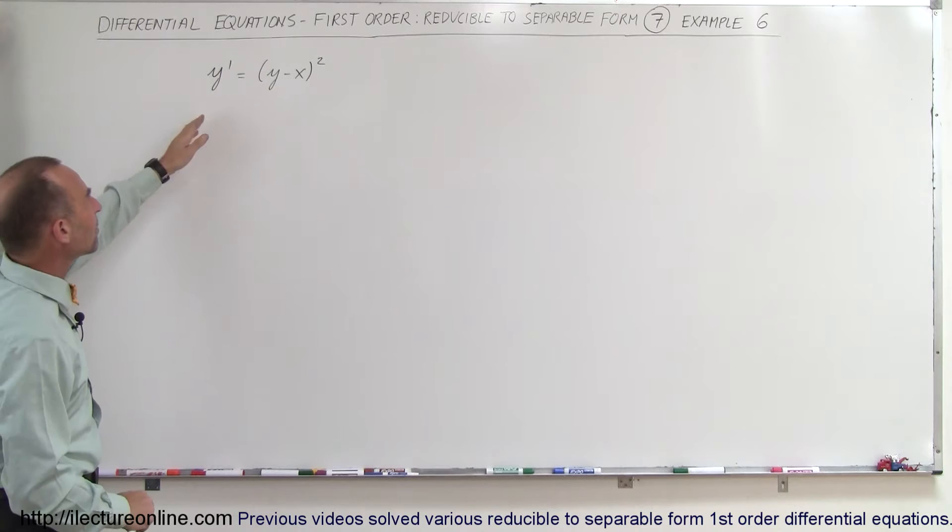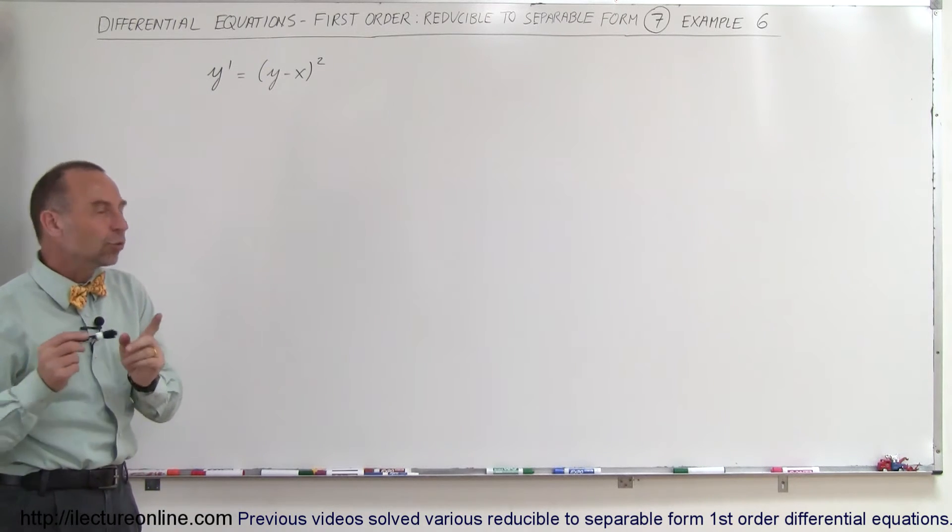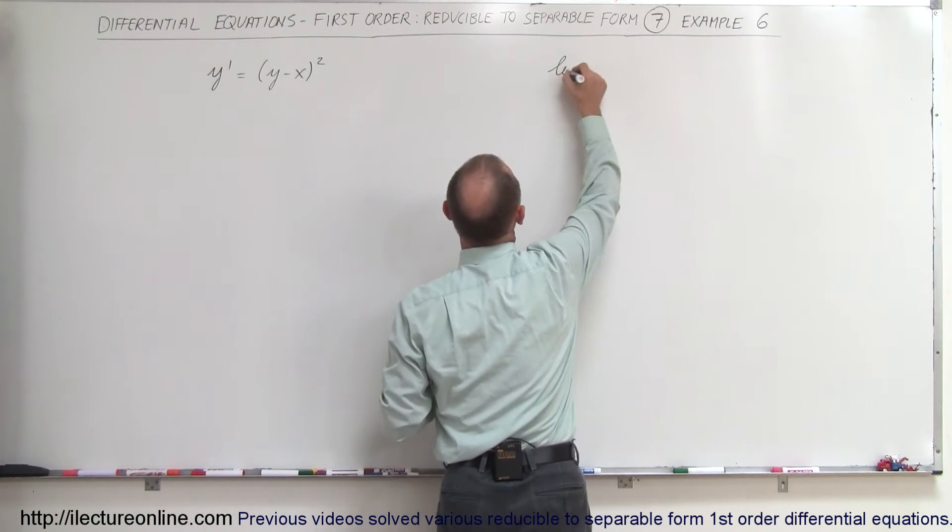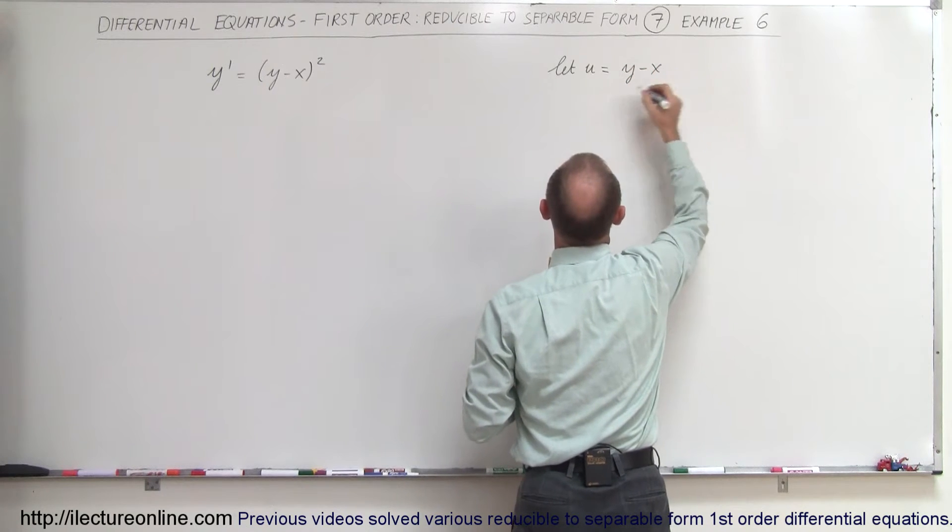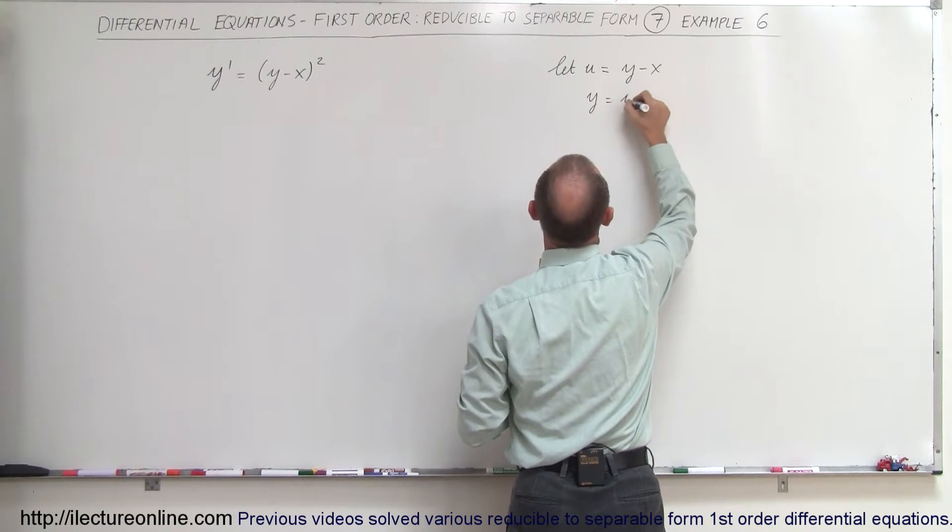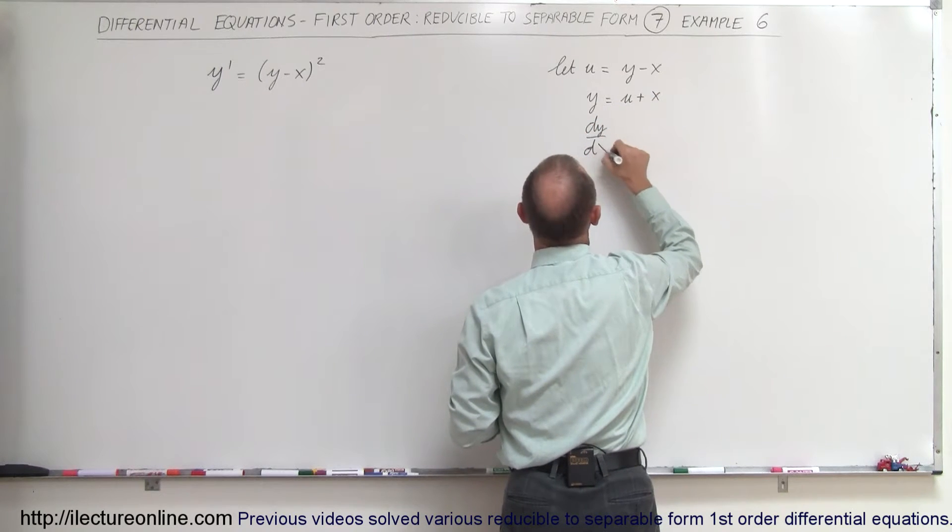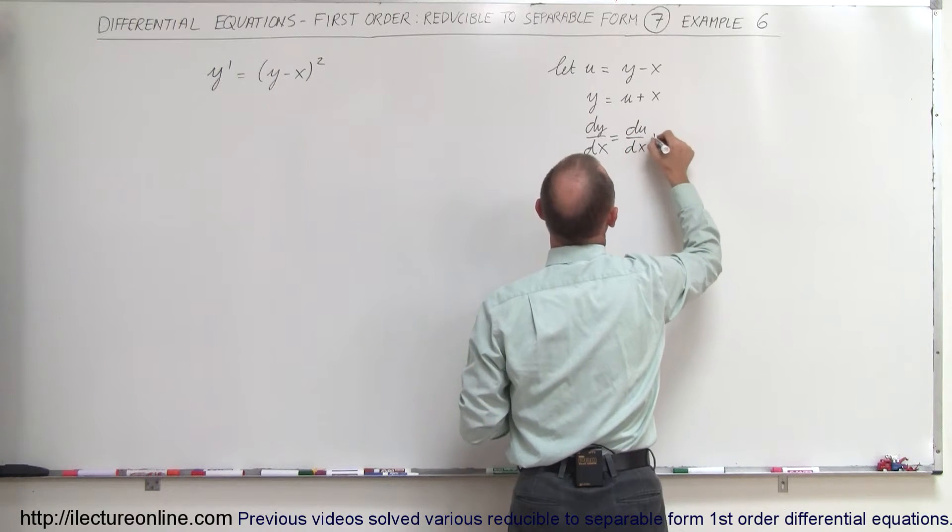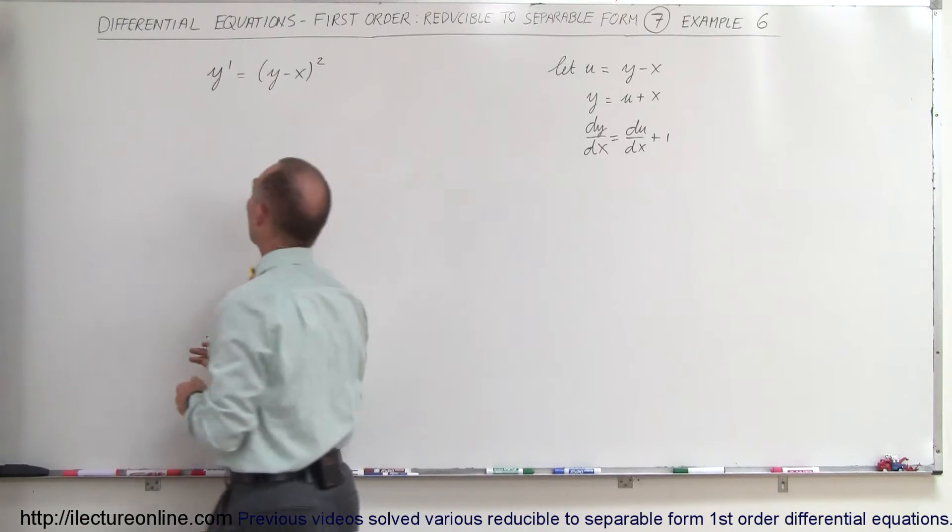So here we have y' equals (y minus x) quantity squared. The obvious way to solve this one would be to let u equal y minus x, which means that y can be written as u plus x, or dy/dx is equal to du/dx plus 1.